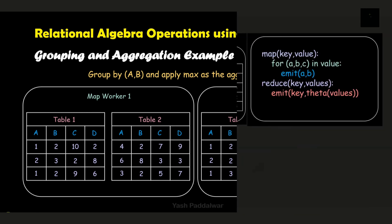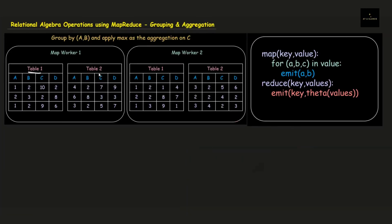That was the algorithm — if you haven't understood it yet, don't worry, we'll walk through an example and by the end of this video you'll understand the entire algorithm as well as step-by-step solving. So let's say we have two map workers and each map worker has two tables, table 1 and table 2. We need to group by attributes A and B, and perform the aggregation operation on attribute C. Attribute B is not playing any other role, so we simply discard it and focus on attributes A, B, and C.